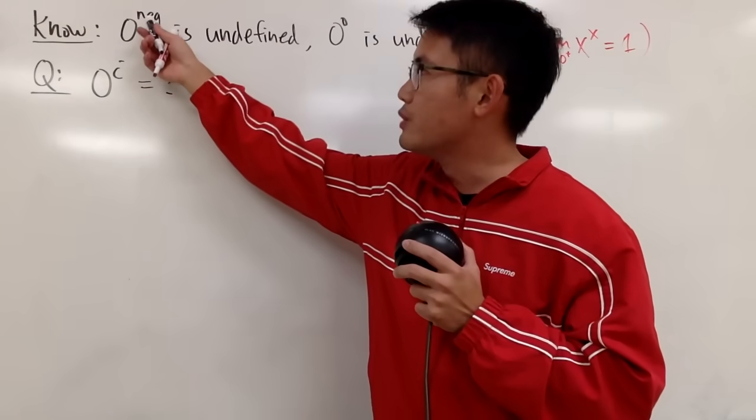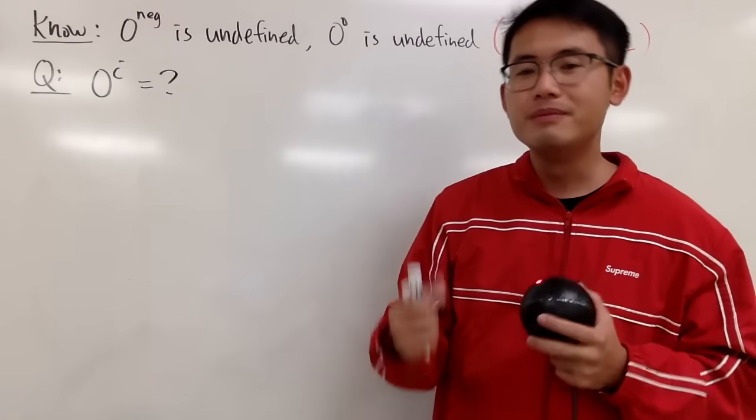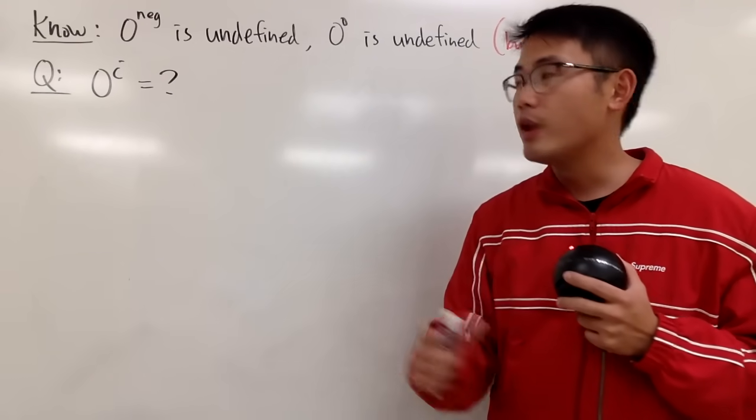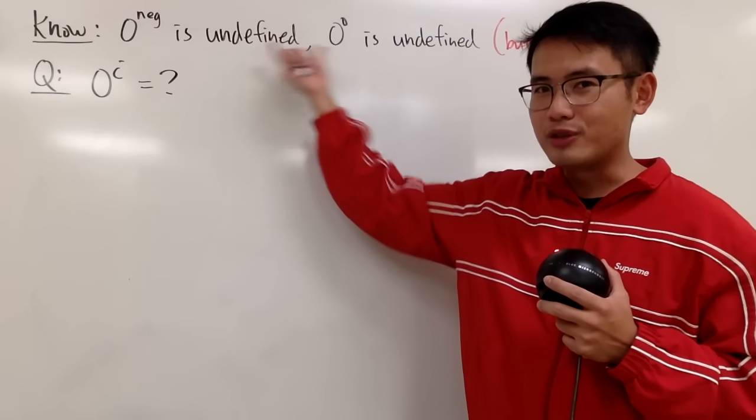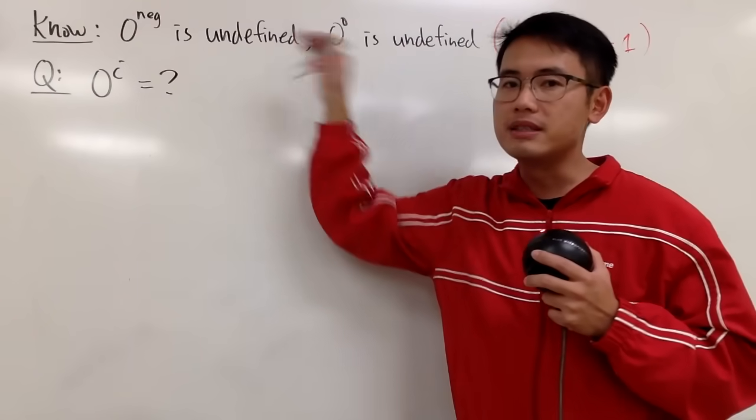For example, when we have 0 to the negative 1 power, that's the same as saying 1 over 0, and of course, we cannot have 0 in the denominator. And right here, we are just talking about computational questions, we are not talking about limits, so 0 to a negative power is undefined.